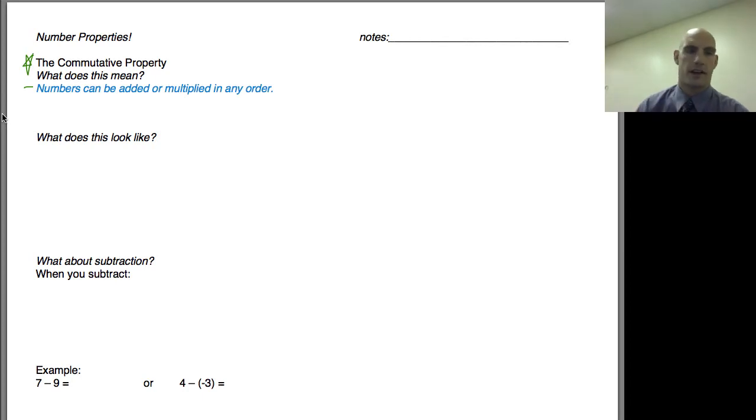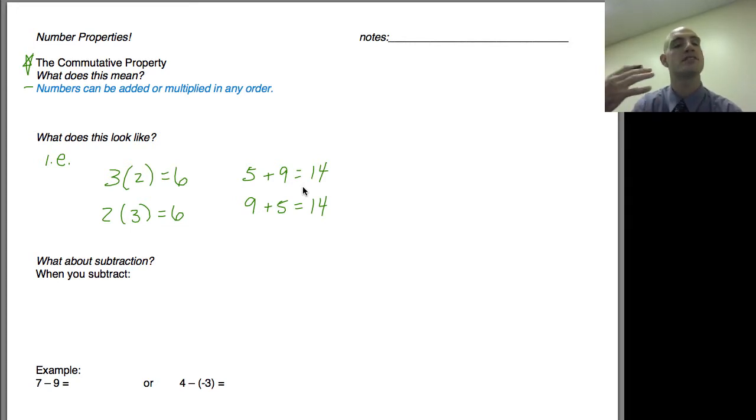What does this look like? Let's say for example we have 3×2, which equals 6. Now that's a simplistic example, but let's look at what happens if we do it the other way. What if I switch the two? 2×3. The answer is the same, and so this switching is the commutative property. It also works with addition. 5+9 equals 14, or 9+5 also equals 14. That's the commutative property. Switching the order does not matter.